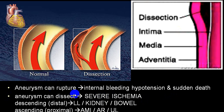Dissection can involve the lower limbs if it is distal, the kidney, and the bowel because of involvement of mesenteric arteries. If it dissects proximally, it can cause acute MI, aortic regurgitation, and ischemia due to involvement of the subclavian arteries.